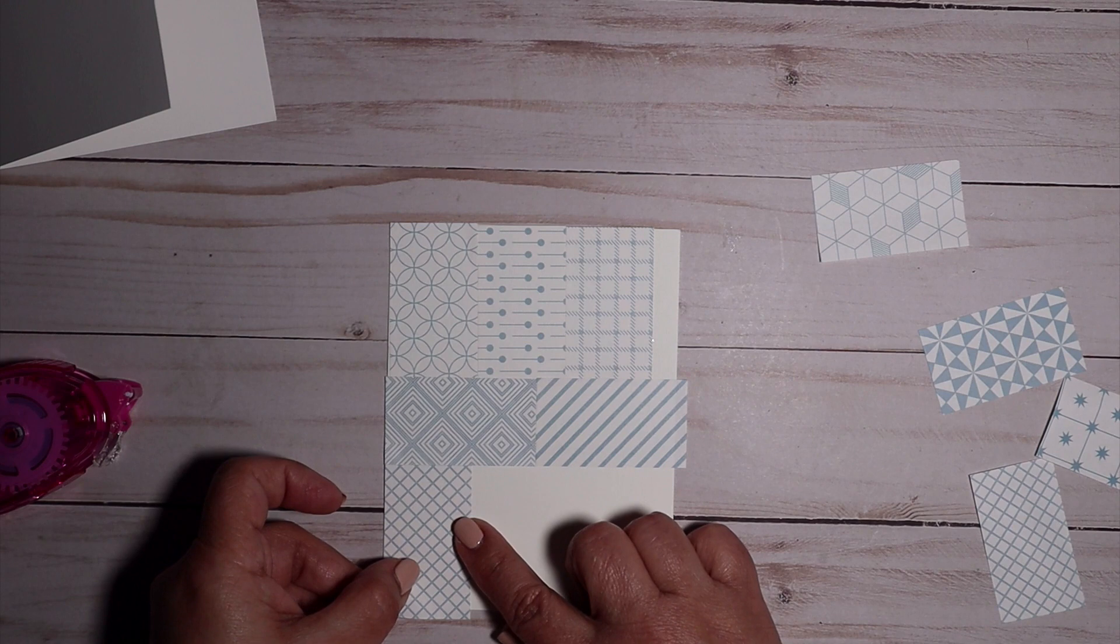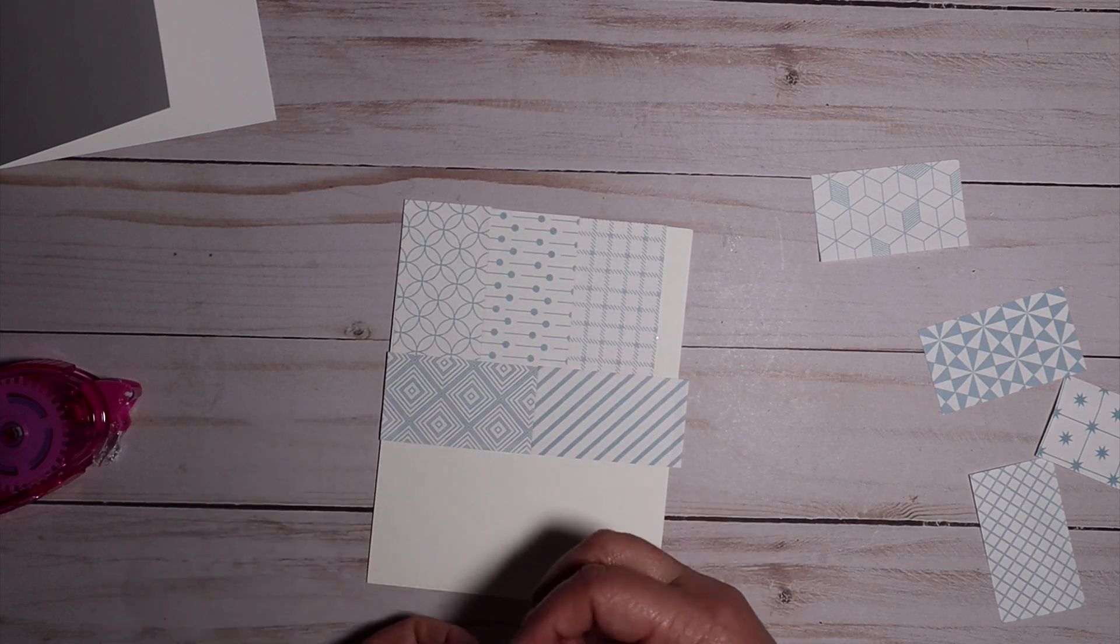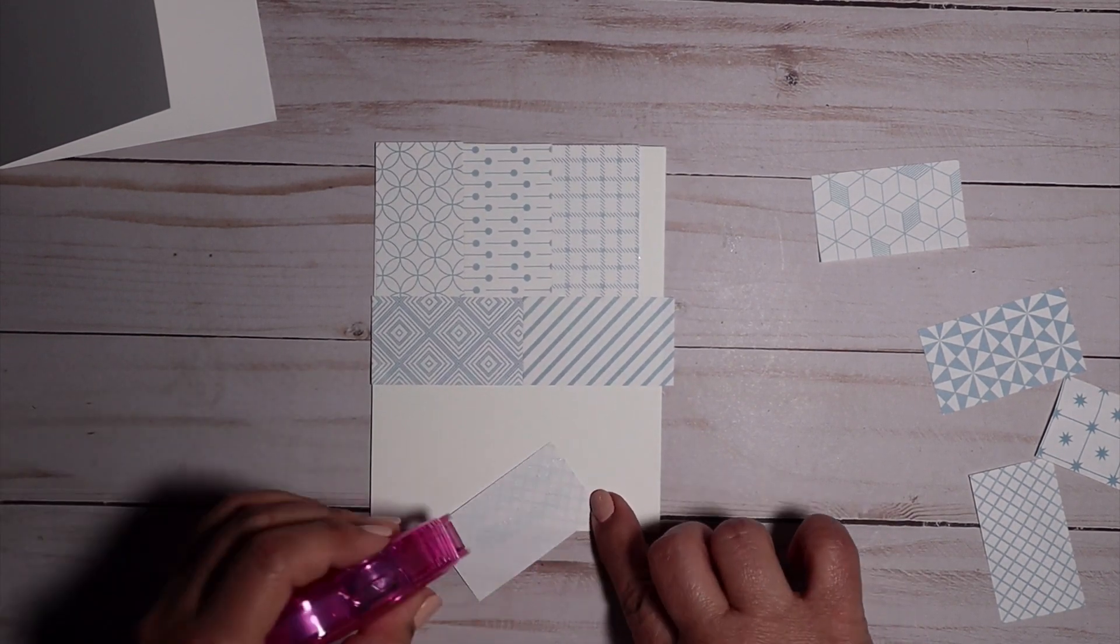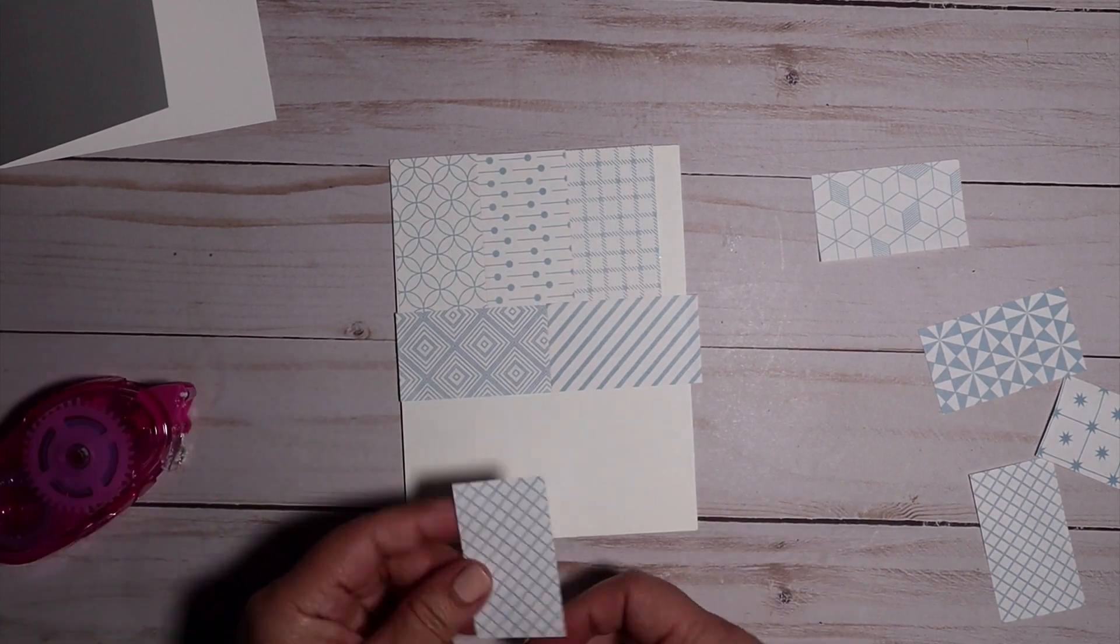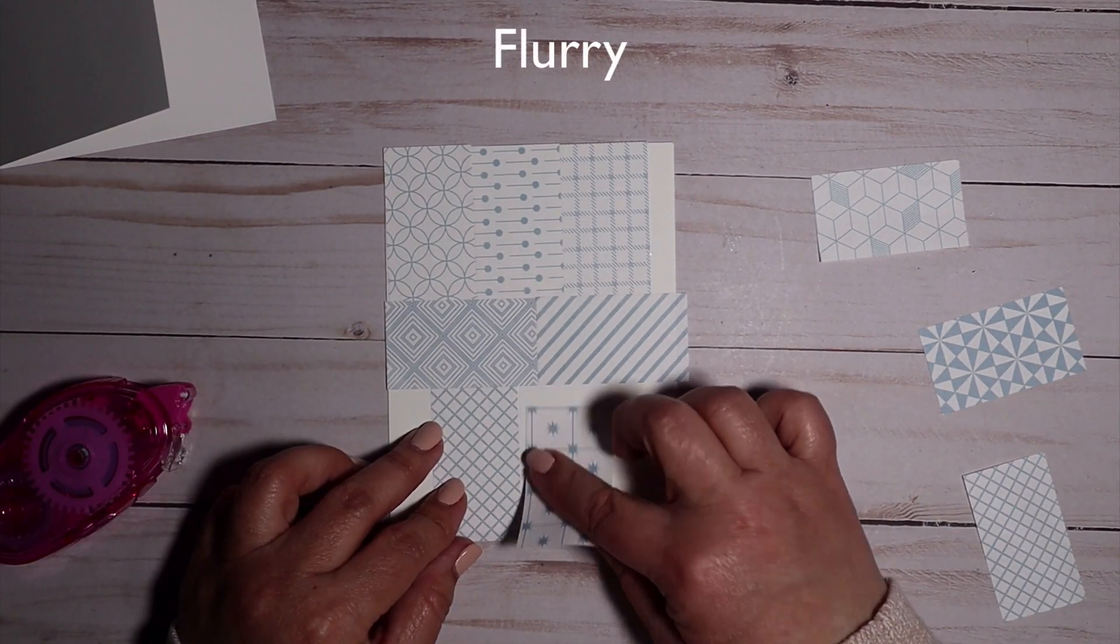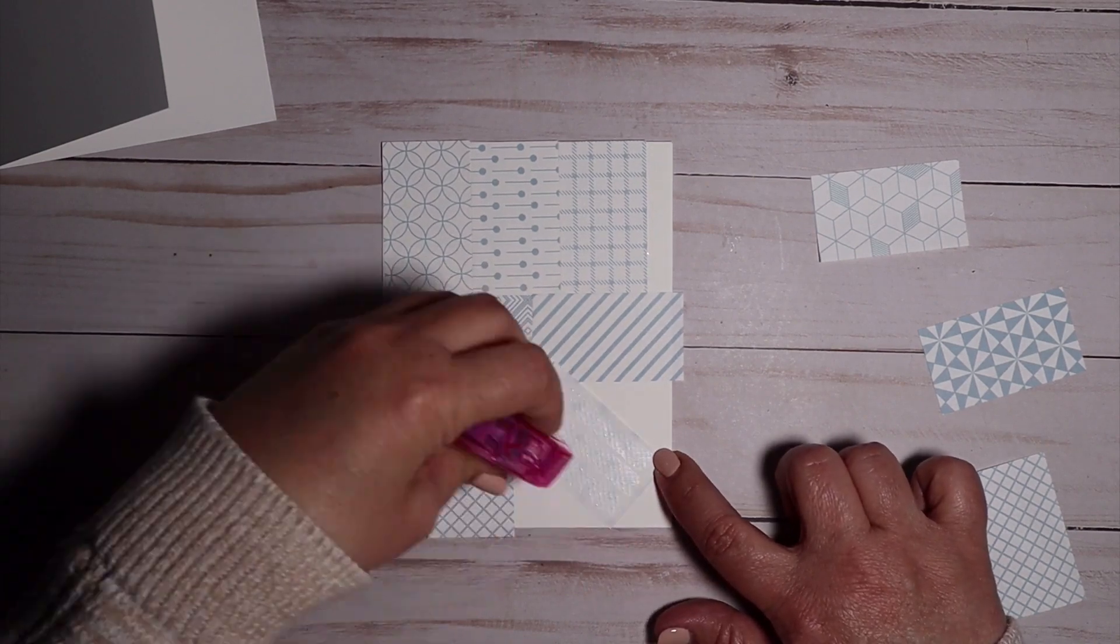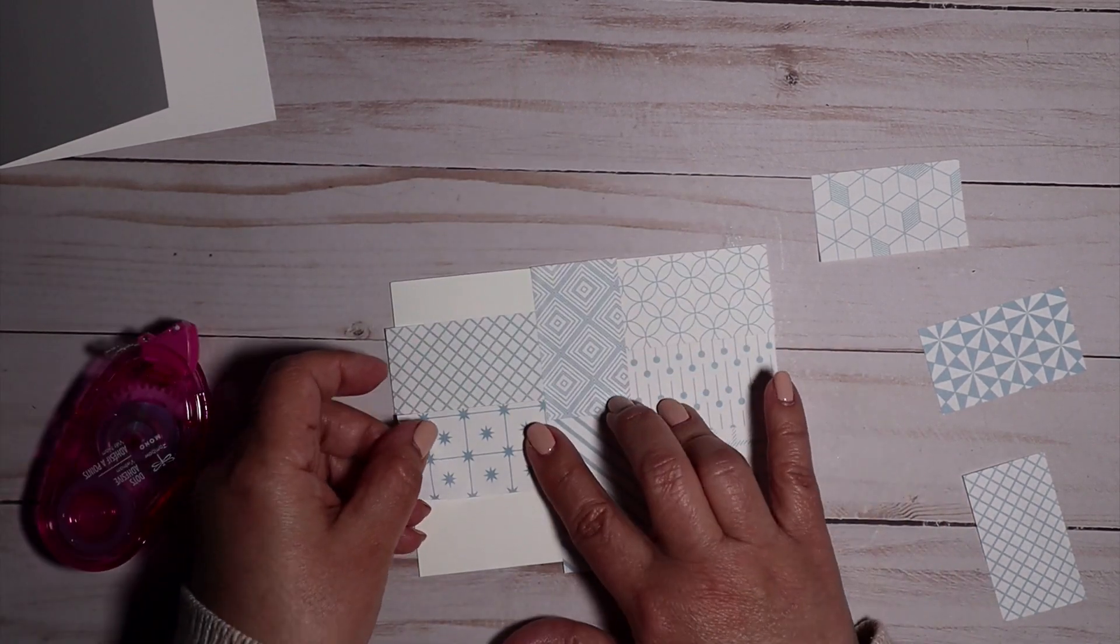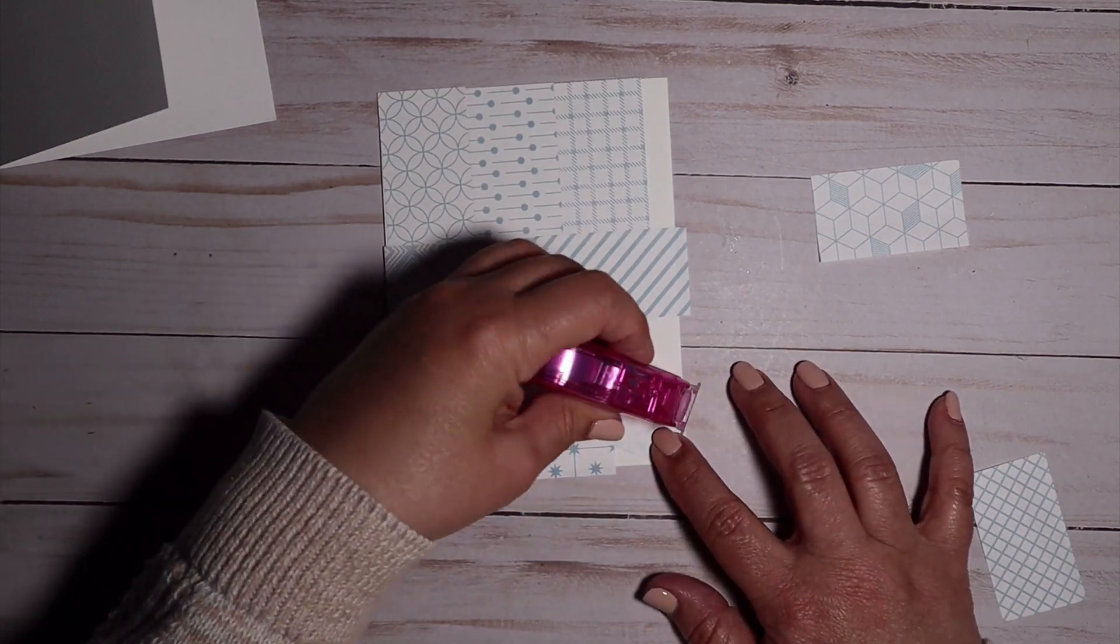As Solaris approached Zephyria, it noticed a peculiar creature living on the planet. It was a little snowflake named Flurry, who was constantly shivering in the icy winds. Solaris felt a pang of sympathy for Flurry and decided to try to warm things up.